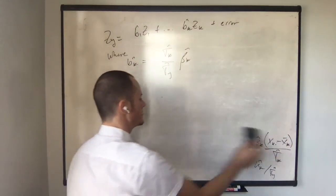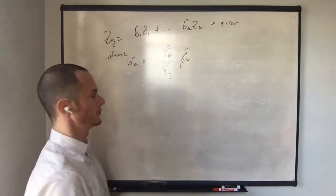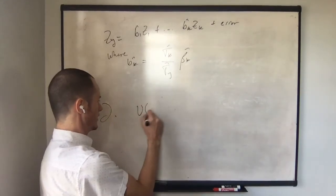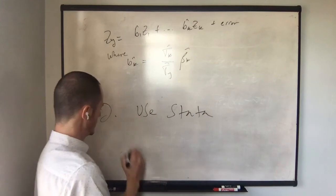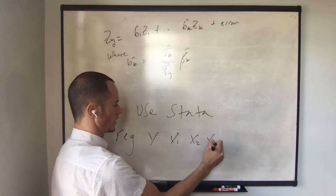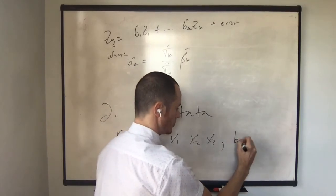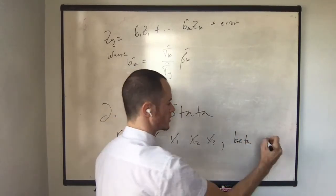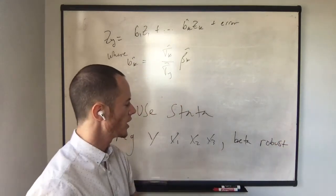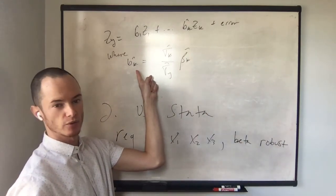Now there's another way to get the standardized regression coefficients — let the computer do the work. Method two: use the beta option in Stata. You run your regression of y on x1, x2, x3, and so on, with the comma beta option, and we'll typically also write robust. Stata will report robust standard errors and also report your beta coefficients — the standardized regression coefficients.